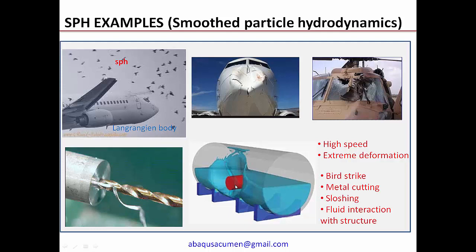Another example is liquid sloshing. In the event of transport or a foreign body hitting a tank, if the liquid happens to be a hazardous material, it might lead to catastrophic failure and loss of life. We need to ensure the structure has sufficient strength to handle the sloshing of the liquid due to such an impact. These are typical examples of SPH modeling.